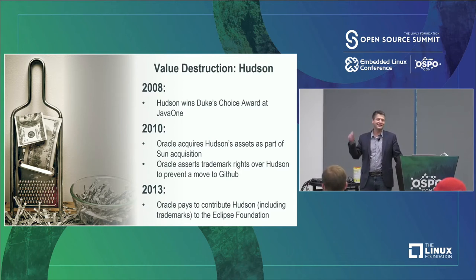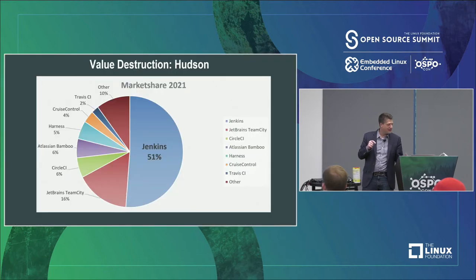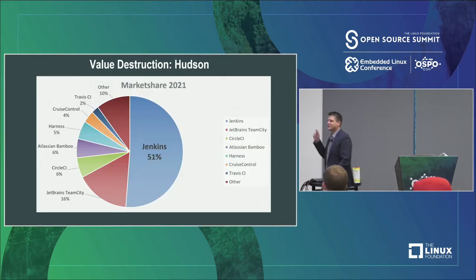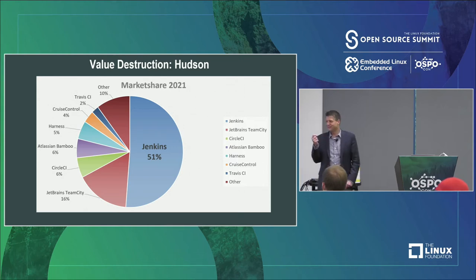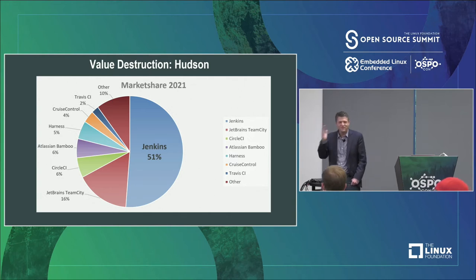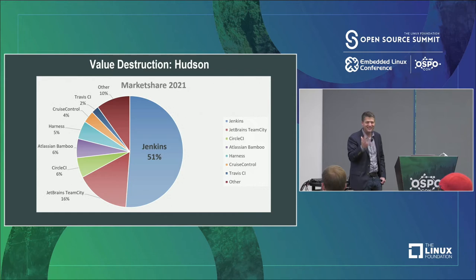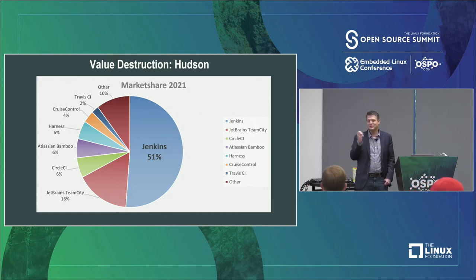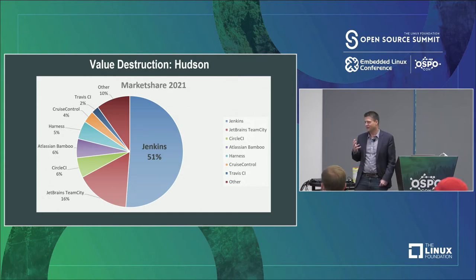In 2019, Hudson was declared dead. This is the market share for Jenkins still as of today. How many people would have liked to have had that? Do you think Oracle, if they'd been thinking correctly, would have liked to have had 51% share in CI/CD tools? Except they didn't — they didn't deal with their community effectively and so they lost the opportunity. They again took a write-down and paid to get rid of it.